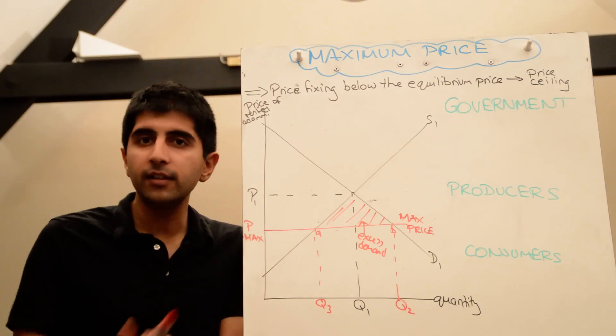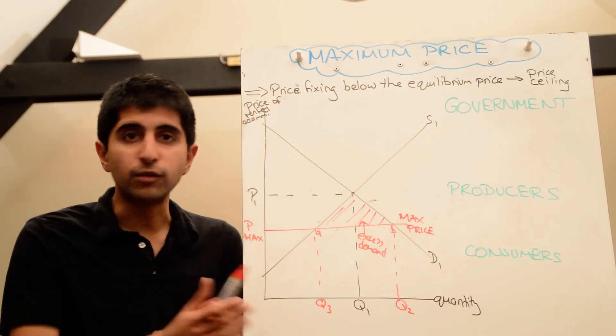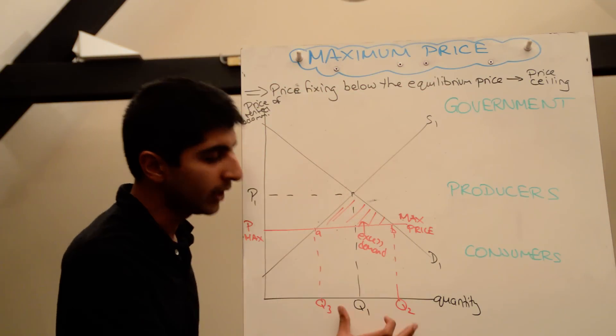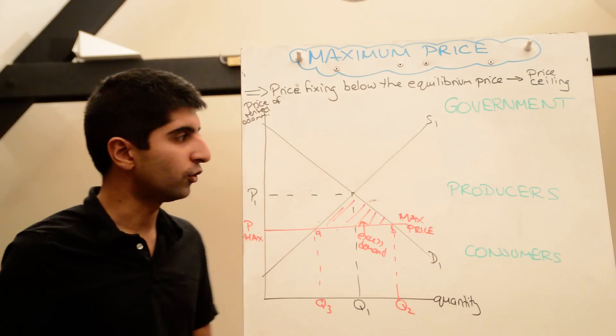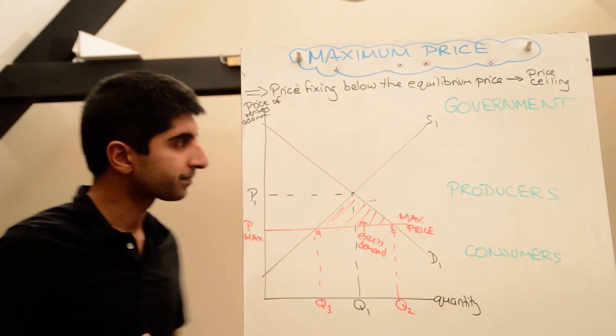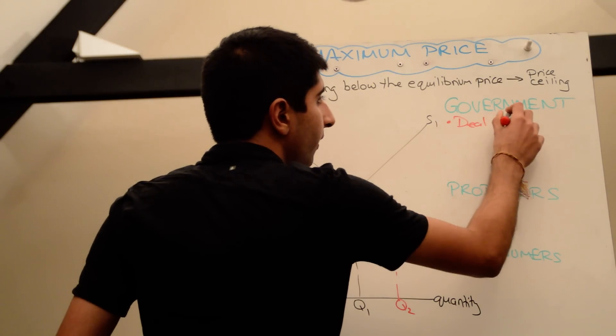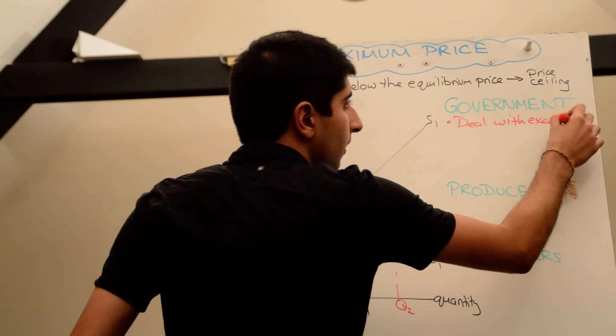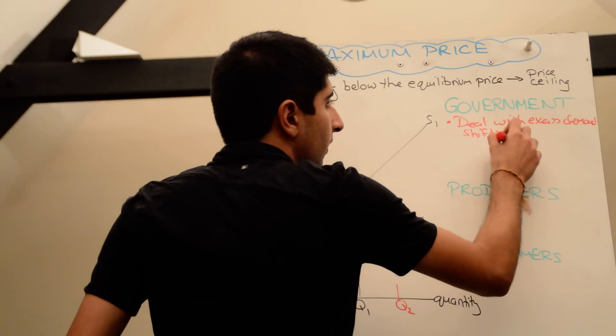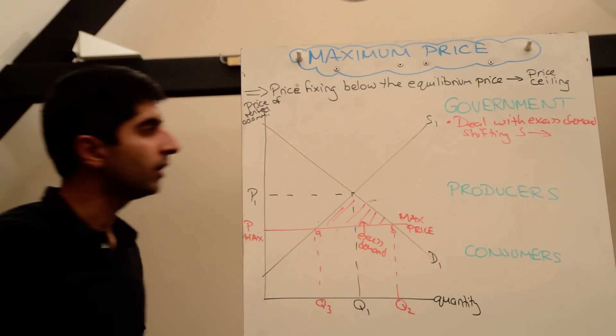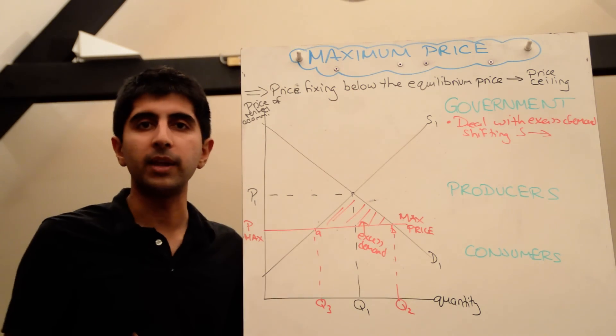So they could do that. Now how could they do that? Well, they can actually subsidize producers of rented accommodation, and that will reduce their costs of producing. It will incentivize them to increase the amount of output they produce, the amount of output that they actually sell on to consumers. But the problem with that is that it's very expensive. So governments need to deal with excess demand, and one way to do it is by shifting supply to the right somehow, or shifting supply back to point B. They use a subsidy and then the supply will shift downwards to point B and that could work.